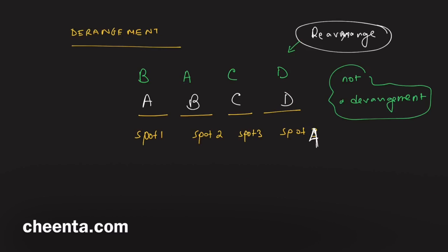Maybe it is like this: B, A, D, C. Now this is a derangement because none of the letters are in their original spot. So the question is, for the case of four letters, how many such derangements are possible?